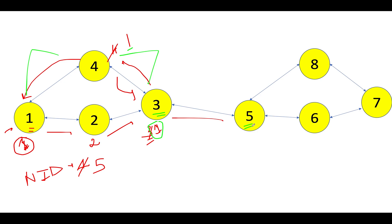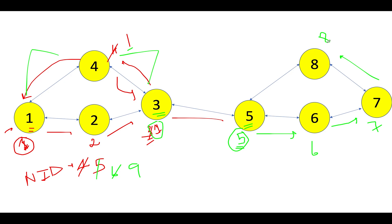Node 5 gets ID 5, next ID updates to 6. Moving forward: node 6 gets ID 6, node 7 gets ID 7, node 8 gets ID 8, and next ID updates to 9. From node 8 there is only one outgoing edge back to node 5. Node 5 already has ID 5; out of 5 and 8, 5 is lower, so node 8's lowest ID updates to 5. Both nodes 8 and 5 have the same lowest ID — not a critical edge. Backtracking to node 7, minimum of 7 and 5 is 5, so node 7 updates to 5 — not a critical edge. Backtracking to node 6, minimum of 6 and 5 is 5, so node 6 updates to 5 — not a critical edge. Backtracking to node 5, both nodes 5 and 6 share the same lowest ID — not a critical edge.